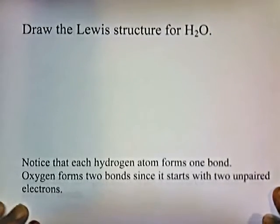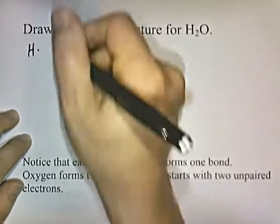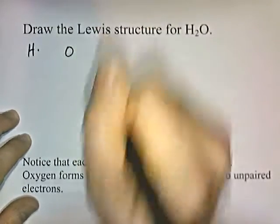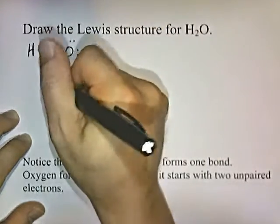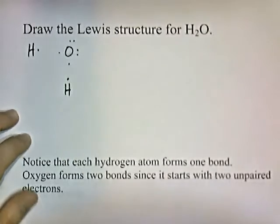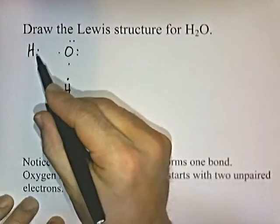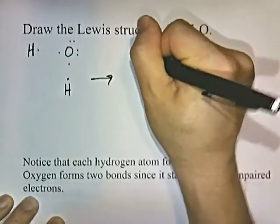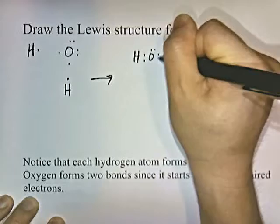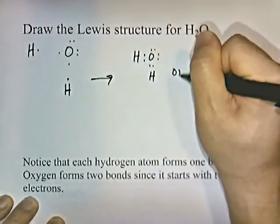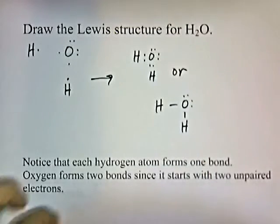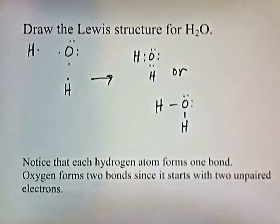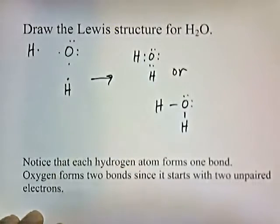Let's draw the Lewis dot structure for H₂O. Hydrogen is in group one, so it has one valence electron. Oxygen is in group six, so it has six valence electrons. And here's the other hydrogen with its one valence electron. We can pair up these electrons and pair up these electrons. Notice that each hydrogen forms one bond because it has one valence electron, and oxygen forms two bonds because it starts with two unpaired electrons.